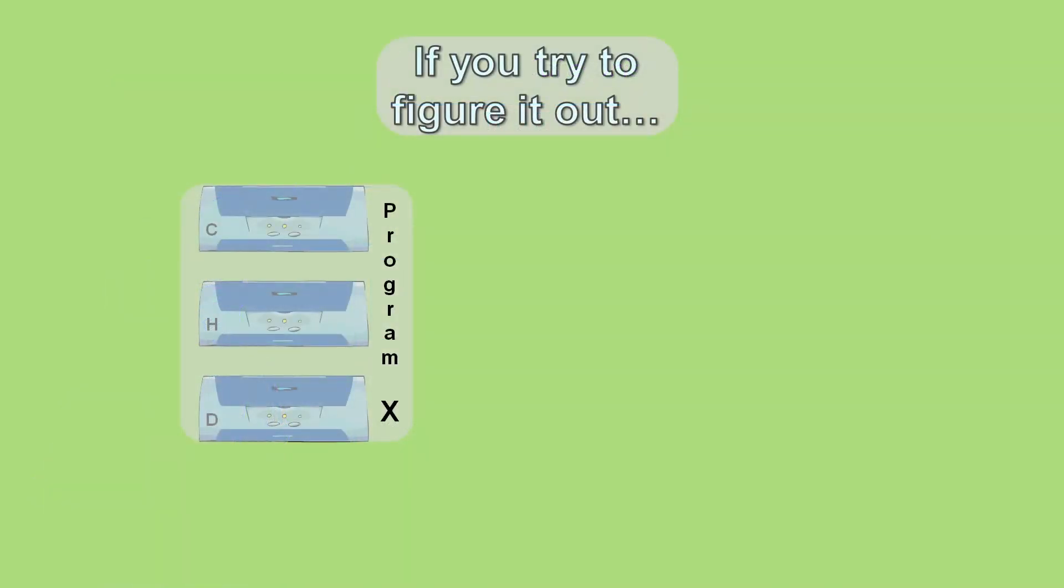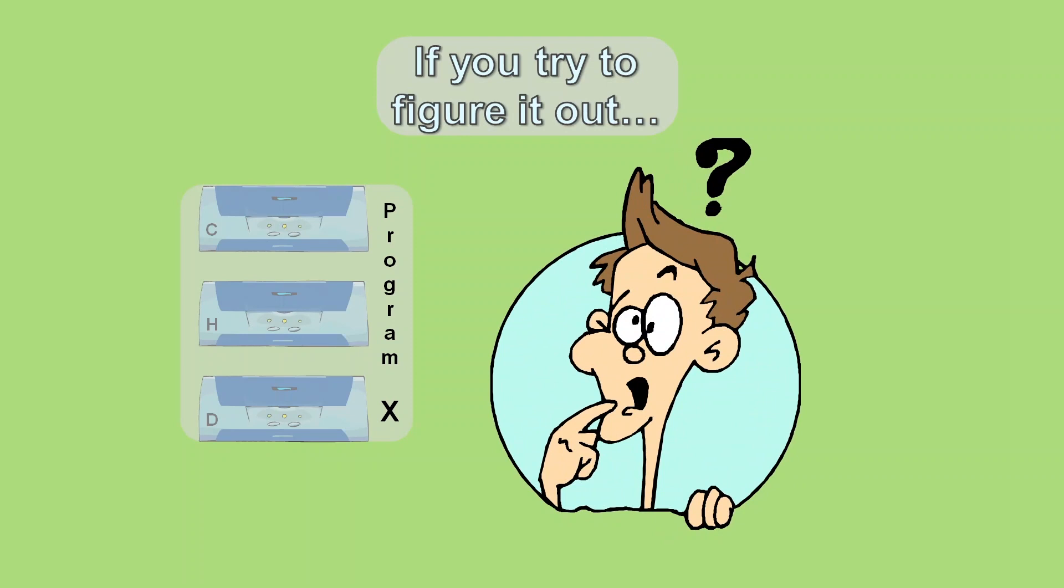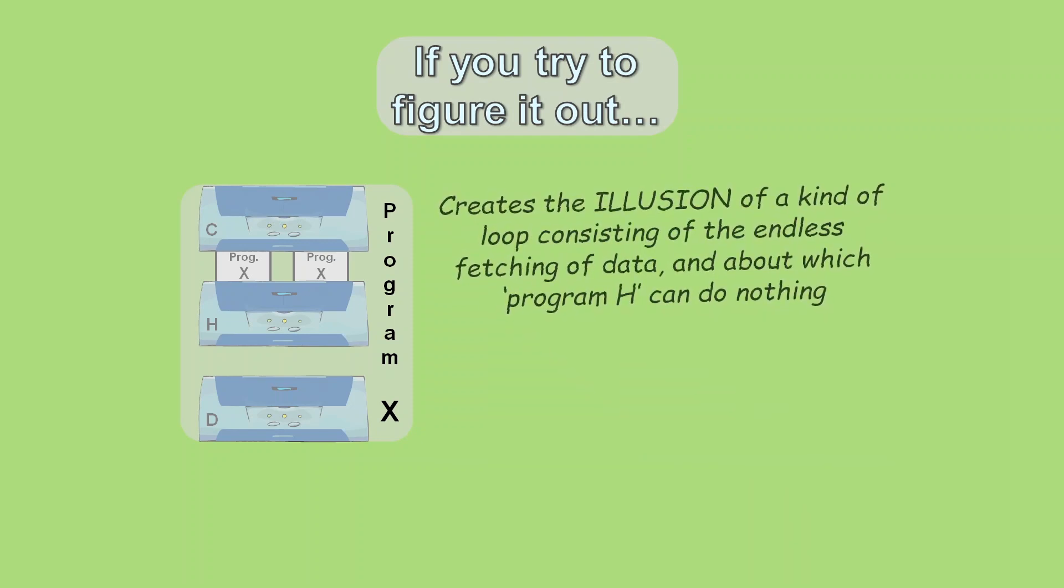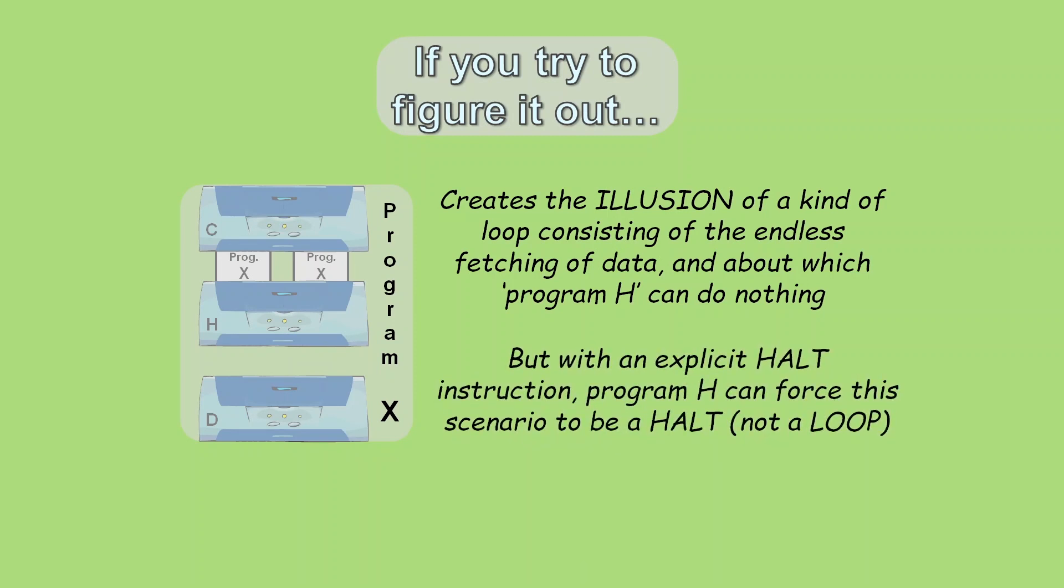Tara thinks that most humans get tricked by the illusion that program X creates. She thinks that when they try to figure out what happens inside program X after H receives its input, it can seem like functionality H would examine the code of program X and see that it needs to include functionality H, which in turn would need to have an input of program X, and so on and so on. It creates the illusion of having to endlessly fetch more and more data, a problem it would appear that functionality H can't do anything about. But Tara believes that with an explicit halt instruction, this scenario is not a looping scenario at all, it's a halting scenario.